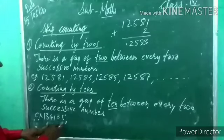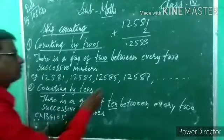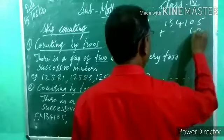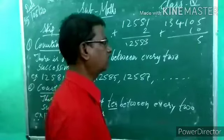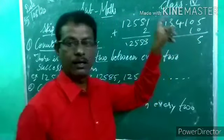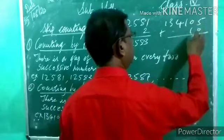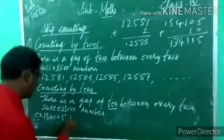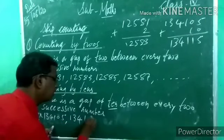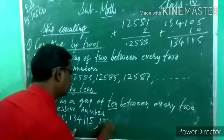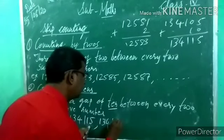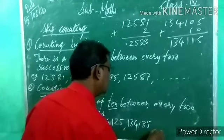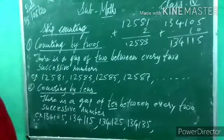Counting by 10, so we add 10. For 1,34,105 plus 10: 5 plus 0 is 5, 0 plus 1 is 1, remaining as it is — 1,34,115. Then 1,34,115 plus 10 is 1,34,125. Then 1,34,125 plus 10 is 1,34,135, then 1,34,145, and so on. Understood? This is skip counting by 10.